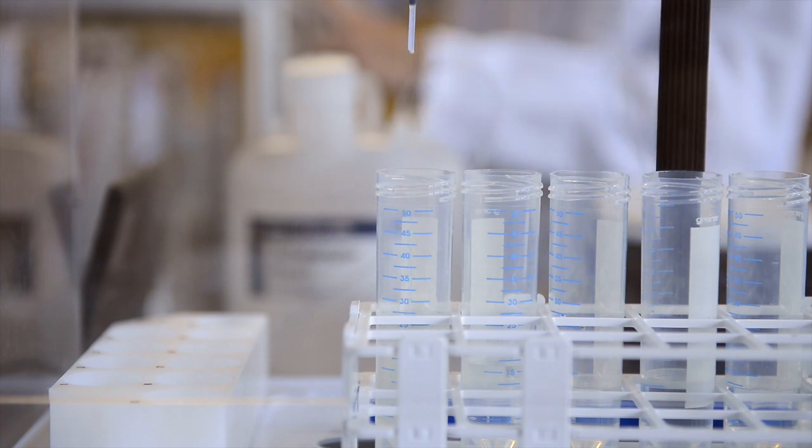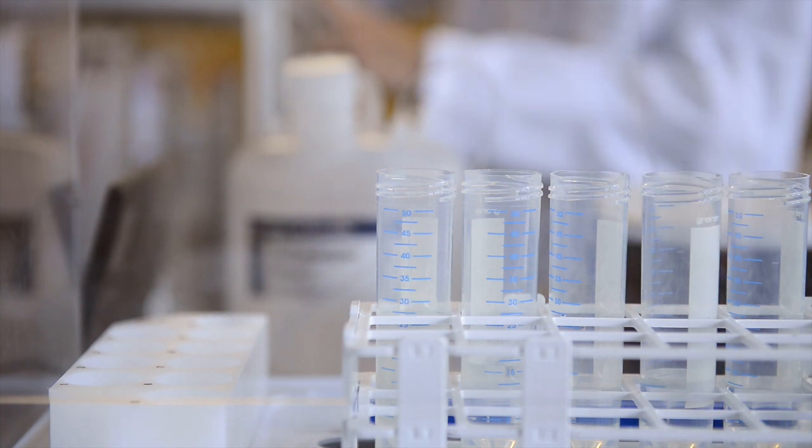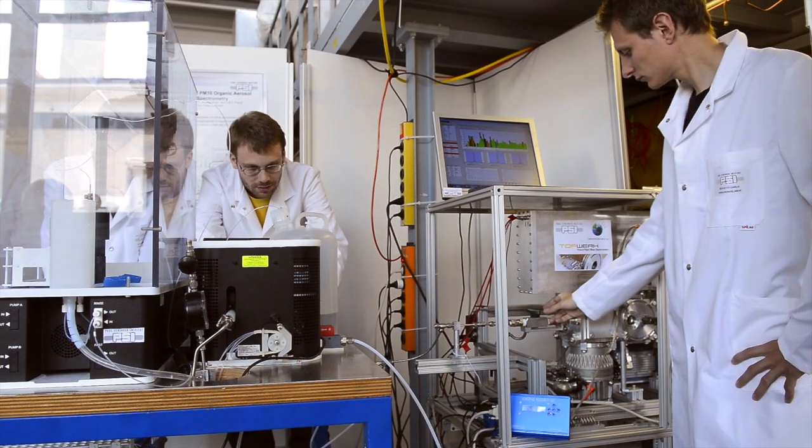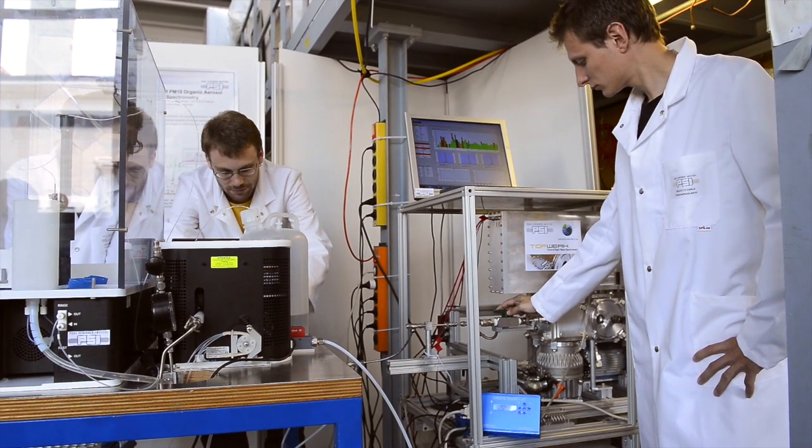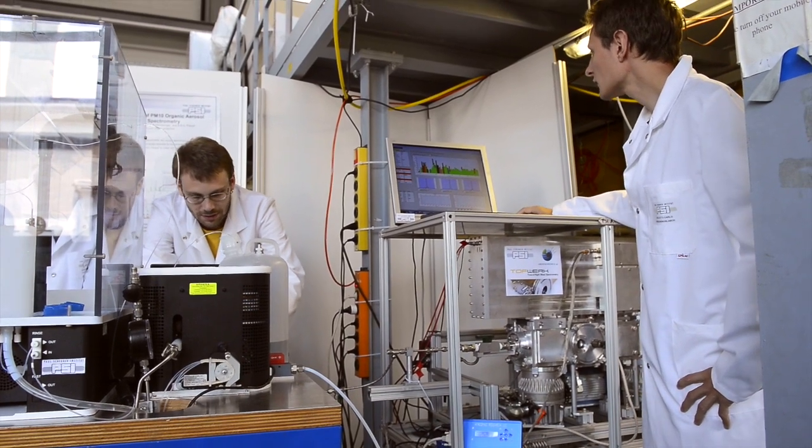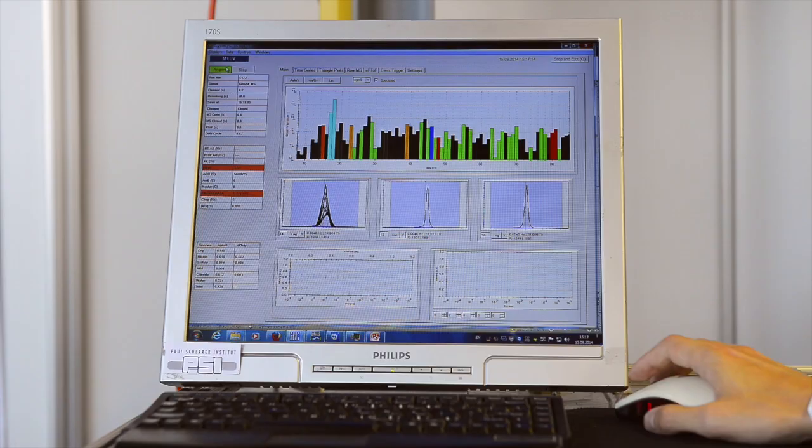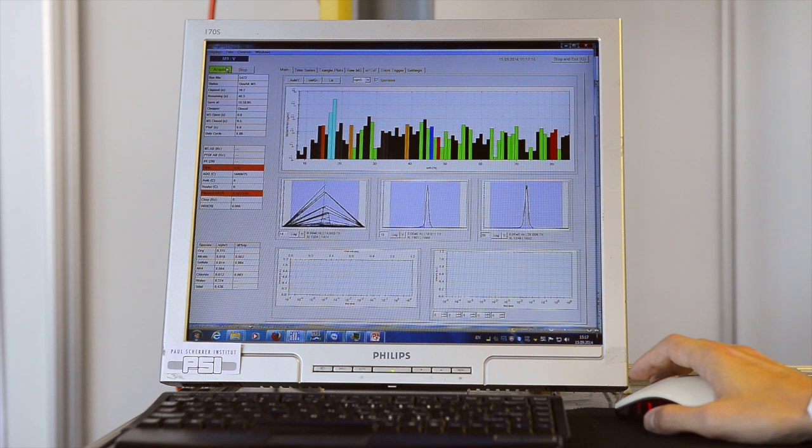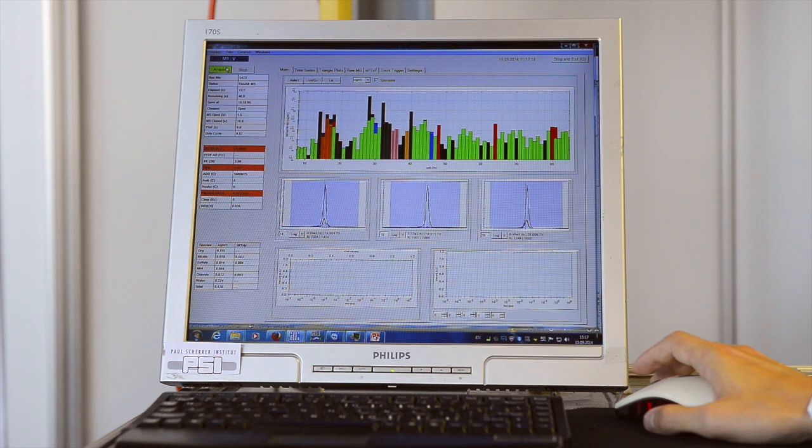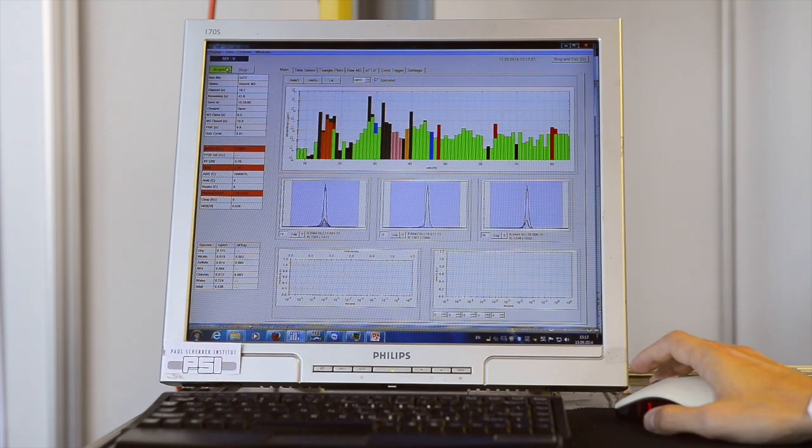For each filter, we obtain an aerosol mass spectrum. Each spectrum gives us a fingerprint, and in this fingerprint is hidden information on the sources of particulate matter in China. For example, we have traffic, coal, wood burning, and secondary aerosols being formed. This can be revealed by statistical analysis of these mass spectra.